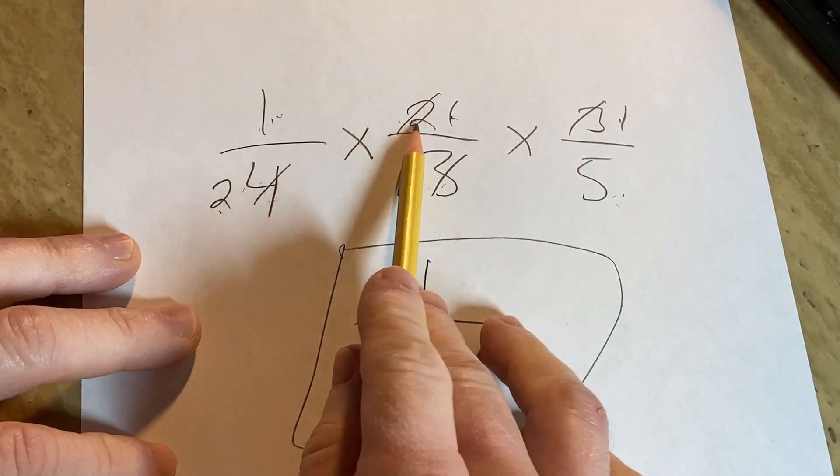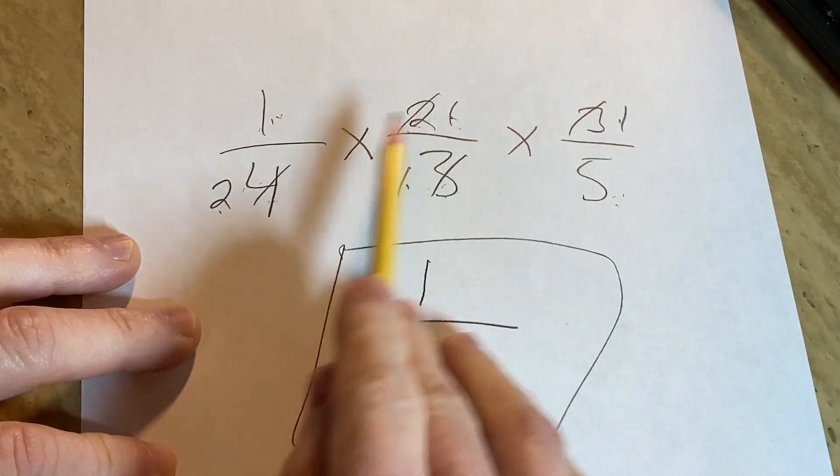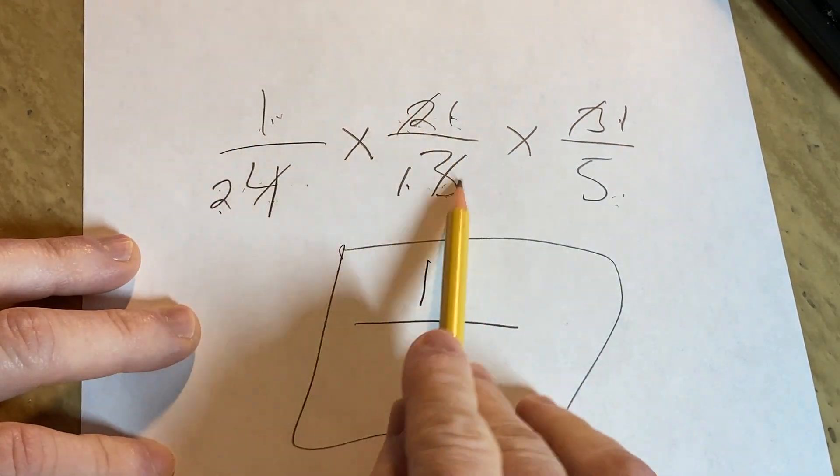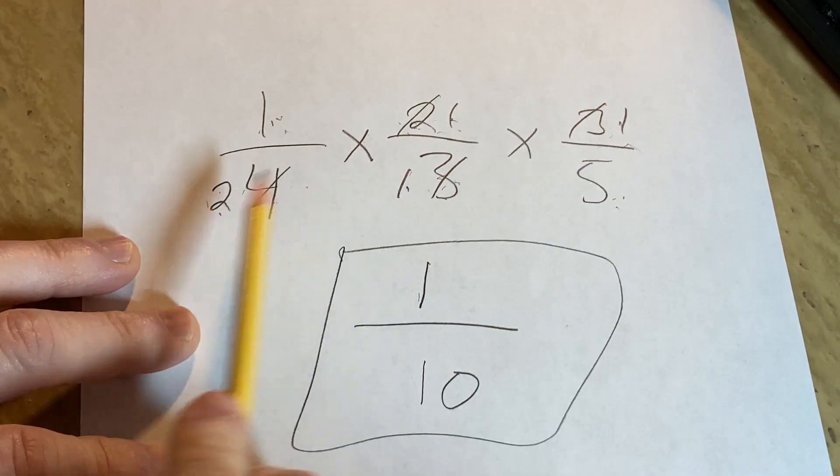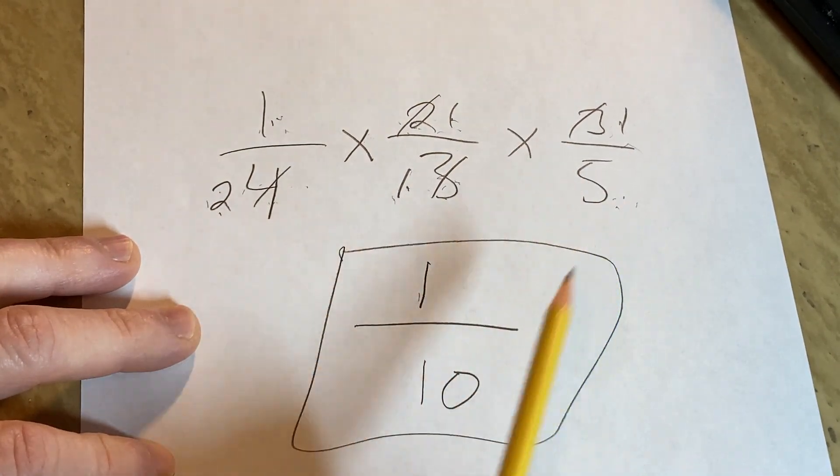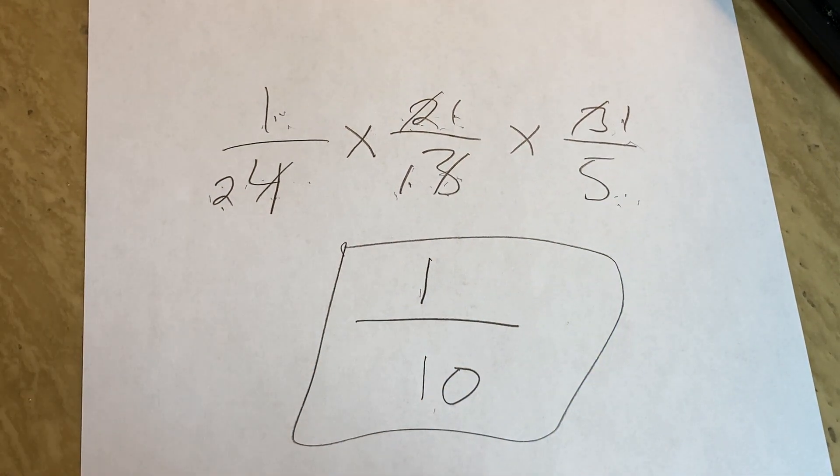And again, in this case, the 2 went into the 2 one time, the 2 went into the 4 twice, and then the 3s are canceled. 1 times 1 times 1 is 1. 2 times 1 is 2, times 5 gives you 10. So we get 1 over 10. Good luck.